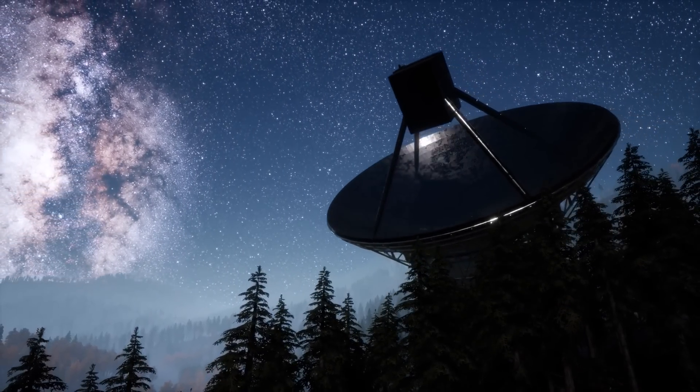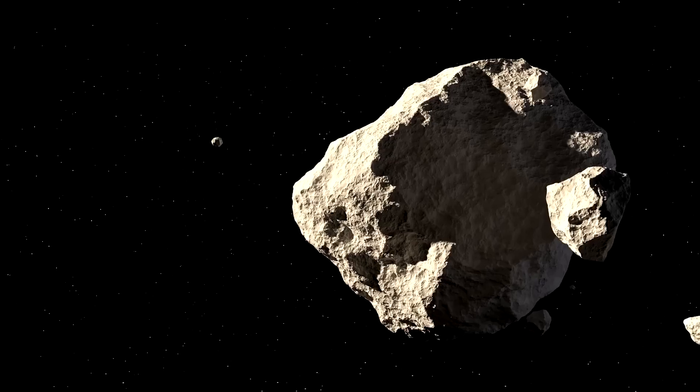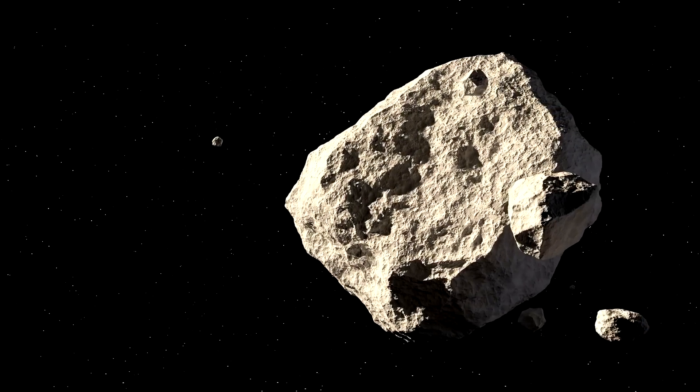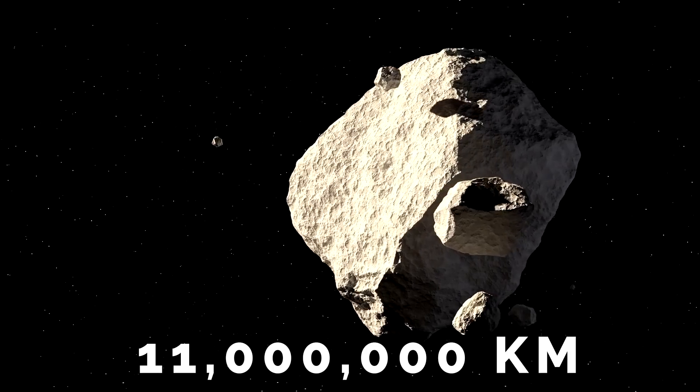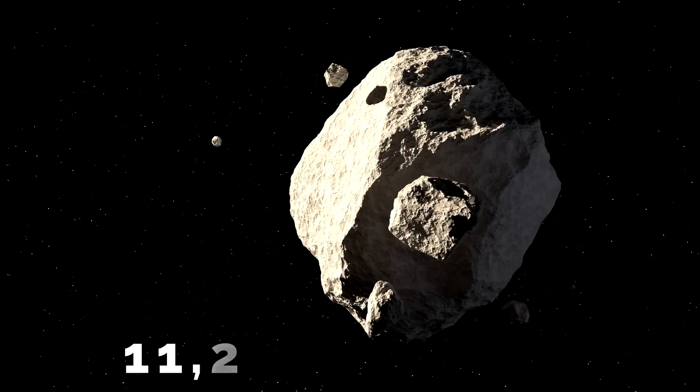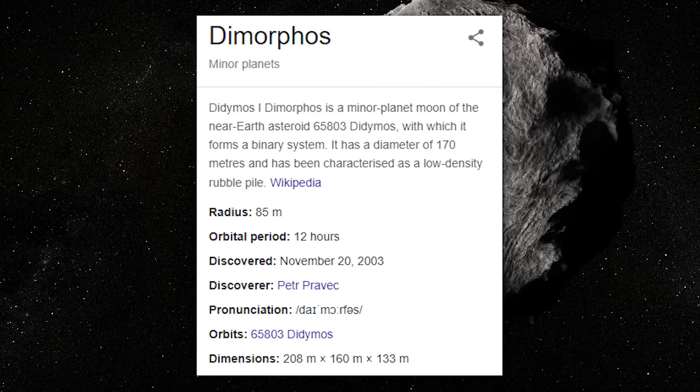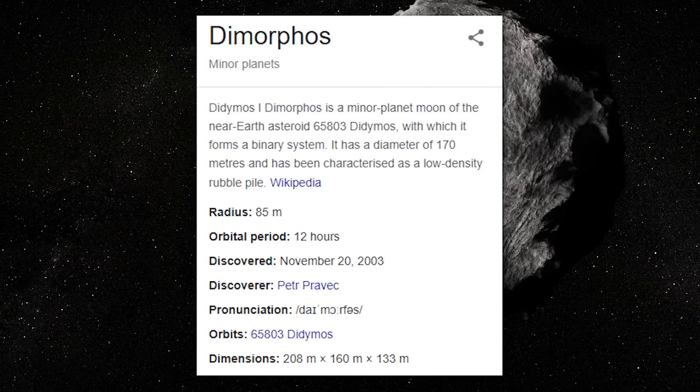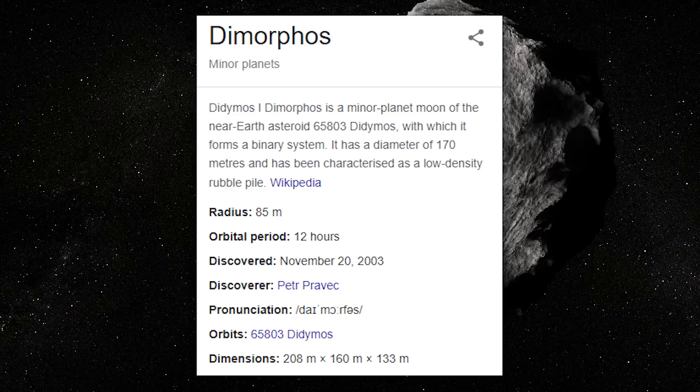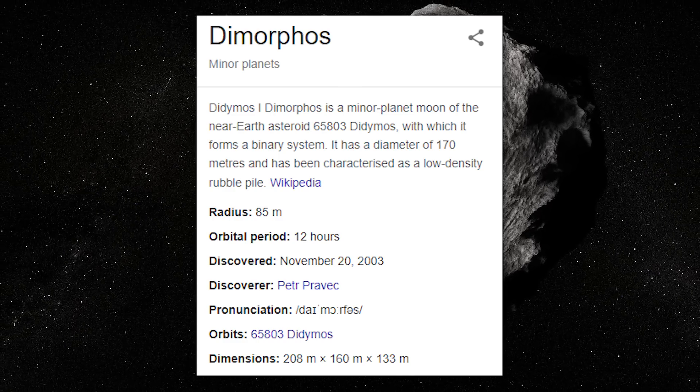And their size was also a big factor. Dimorphos and Didymus are over 11 million kilometers from Earth and in no danger of causing us problems. But, Dimorphos is about 160 meters in diameter, which is right in the sweet spot for common asteroids that could cause major damage if one were to hit us.